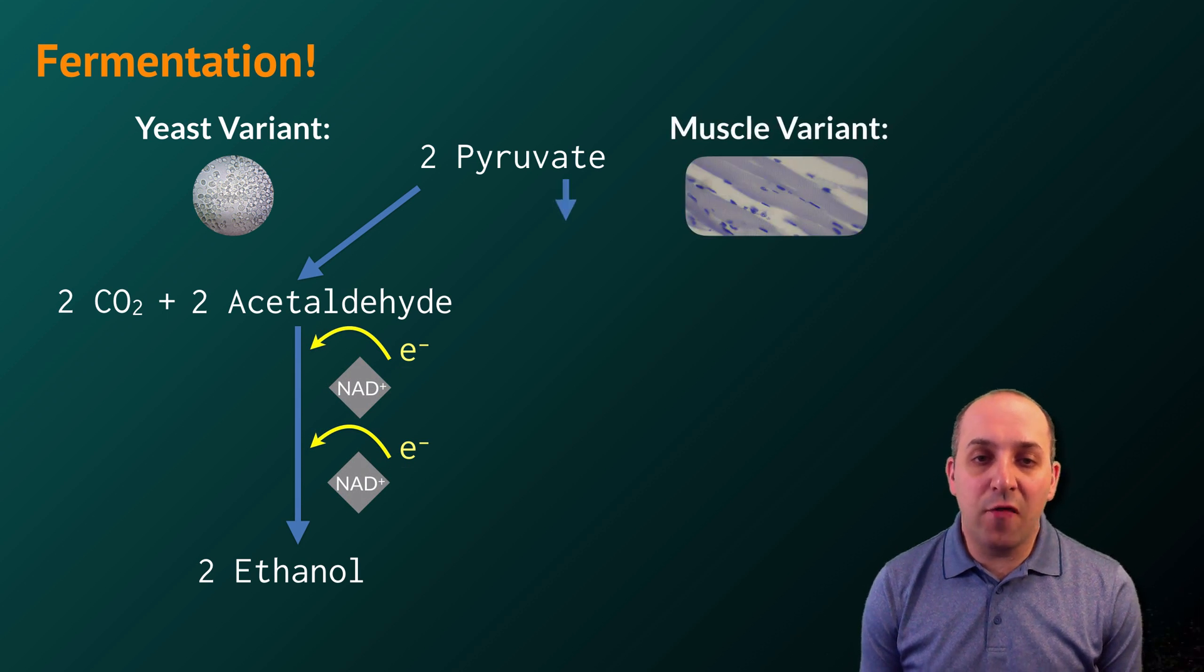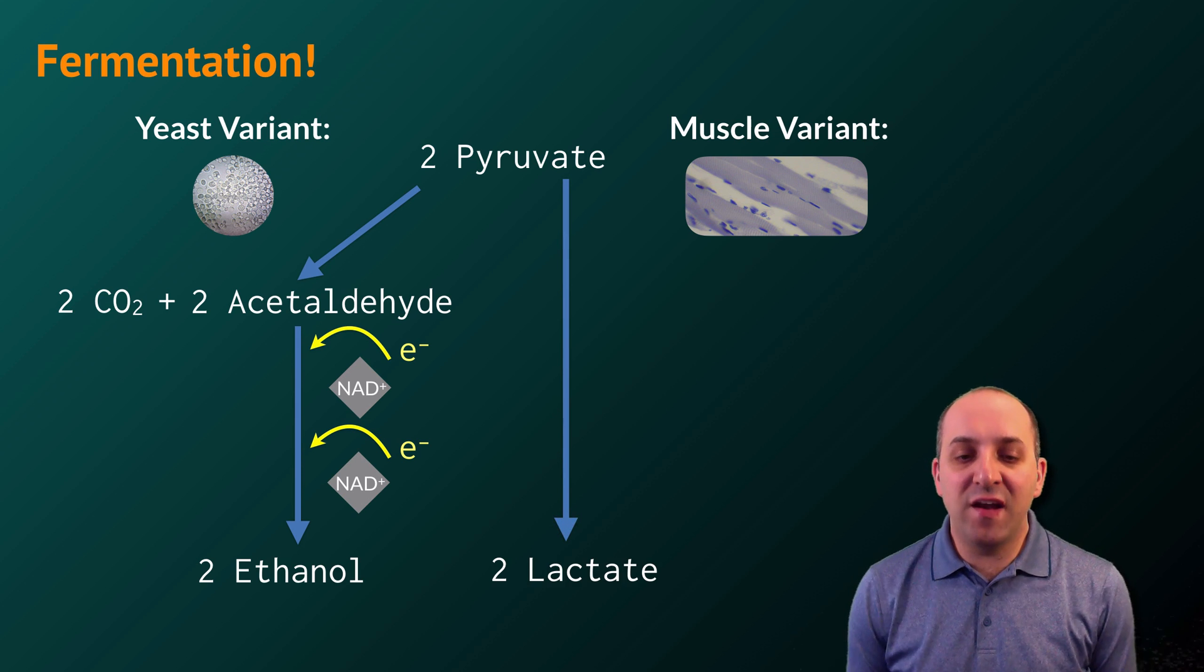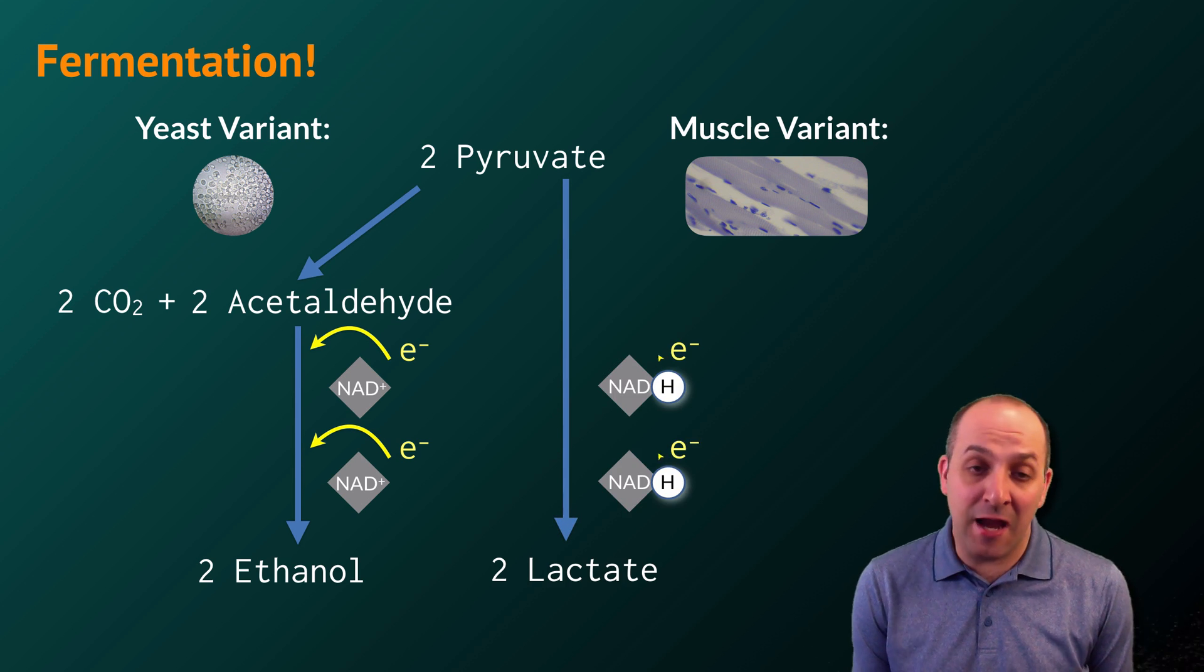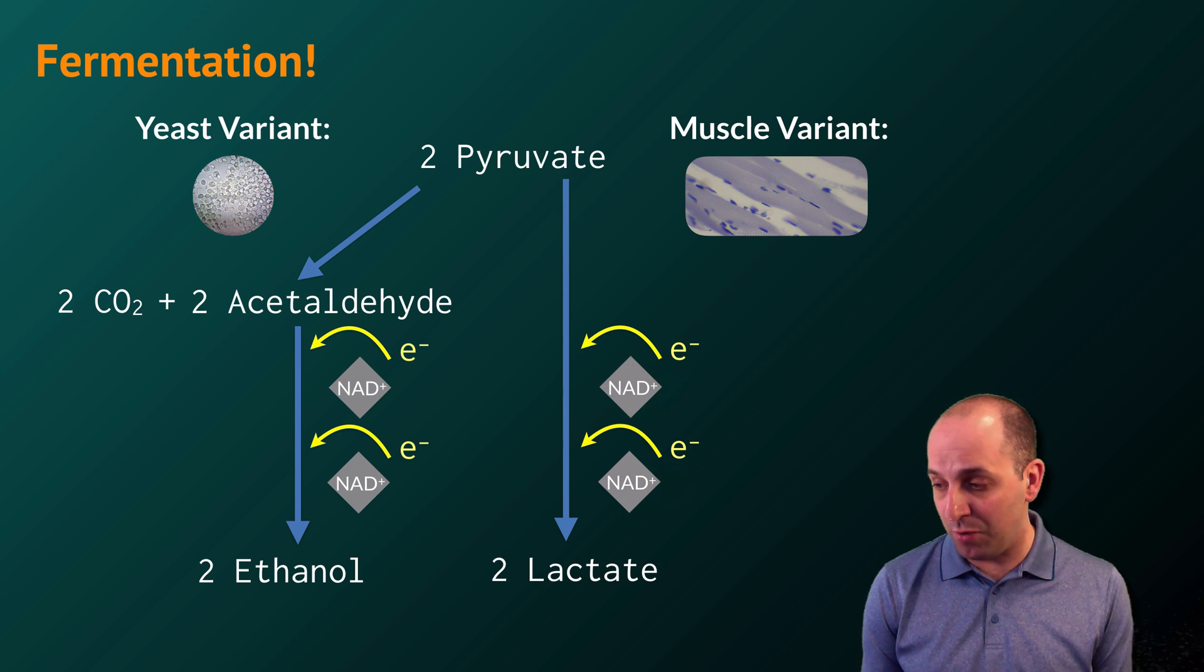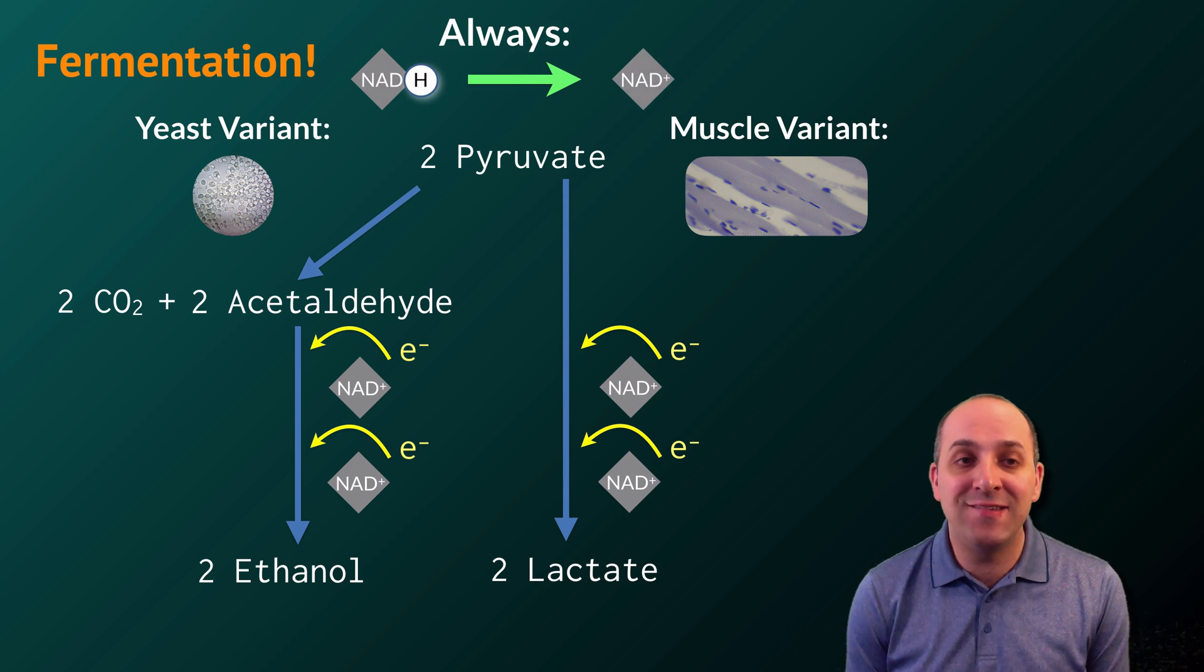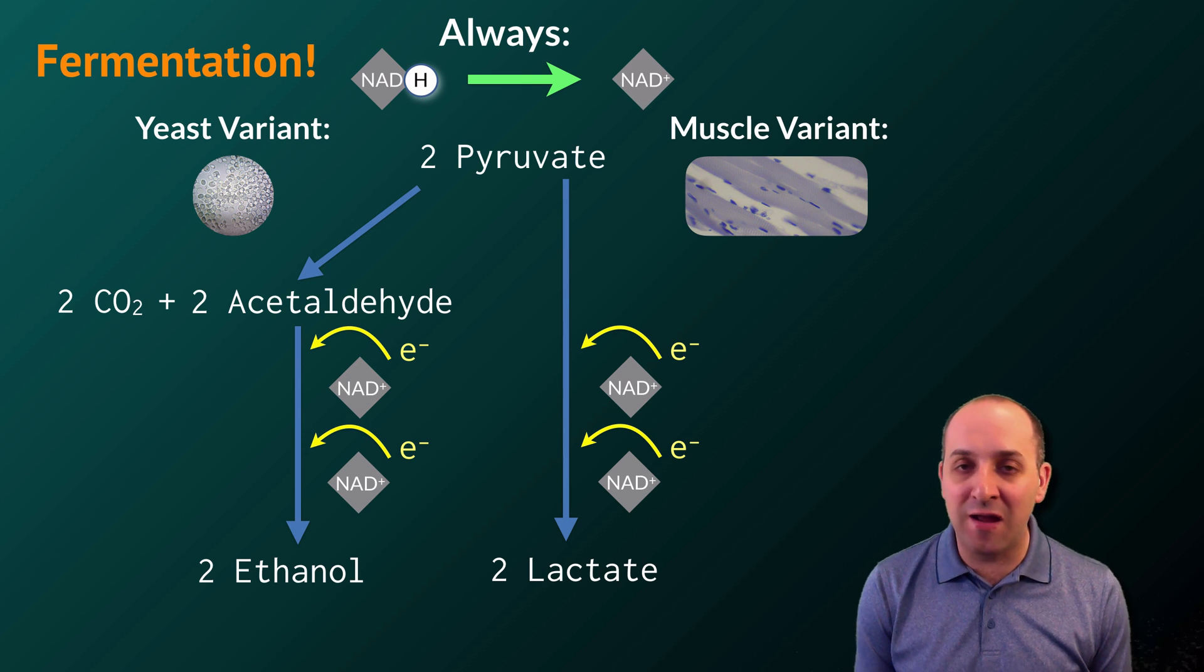Muscle cells carry out the process somewhat differently. Pyruvate is converted directly into lactate through the oxidation of NADH back into NAD plus. Regardless of how it's done, we will always have the oxidation of NADH to NAD plus by the end of fermentation, which is absolutely required for glycolysis to continue.